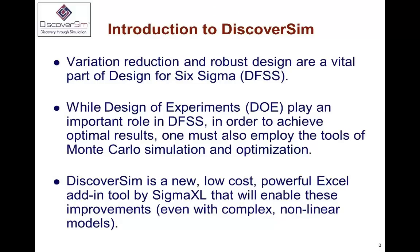When we talk about design for Six Sigma, one of the things we talk about is robust design and variation reduction. An important tool is the design of experiments, which gives us a Y equals F of X transfer function. We can play with the X's to determine what they need to be to achieve the desired Y. However, what we don't get from a straight DOE analysis is the uncertainty. What if we have uncertainty in the X's and are not able to control them perfectly? This is where Monte Carlo simulation comes into play, allowing you to model the uncertainty in the X's so you can observe what happens in the Y's.